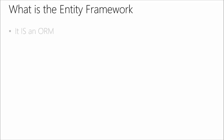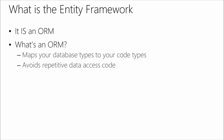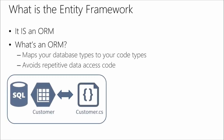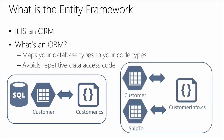Let's start with the architecture of Entity Framework. What is Entity Framework? Entity Framework is an ORM — an Object Relational Mapper — which maps your database types to your code types. In your database you have a customer table, and you want to map that to a customer class in your code. As we write applications we use repetitive code over and over; the ORM handles transactions and querying for you. Entity Framework also allows you to take multiple tables and map them to one single class, or vice versa.